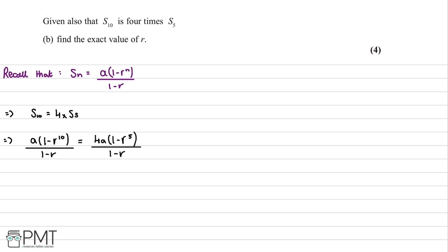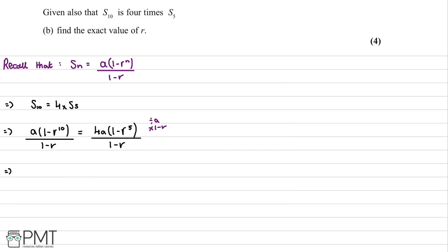We rearrange to solve for r. We divide both sides by a, cancelling a on both sides. Then we multiply both sides by 1 minus r to cancel the denominators. This leaves us with 1 minus r to the power of 10 on the left and 4 times 1 minus r to the power of 5 on the right.